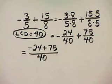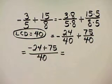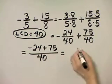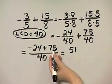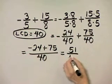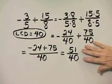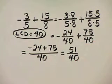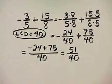We are adding numbers with unlike signs, so we actually subtract these absolute values. 75 minus 24 is 51. We keep the sign of the number with the larger absolute value — that's 75, which is positive. So in the numerator we have positive 51 over 40, and this is simplified. 51 and 40 have no common factors other than 1, so here is my sum in simplest form.